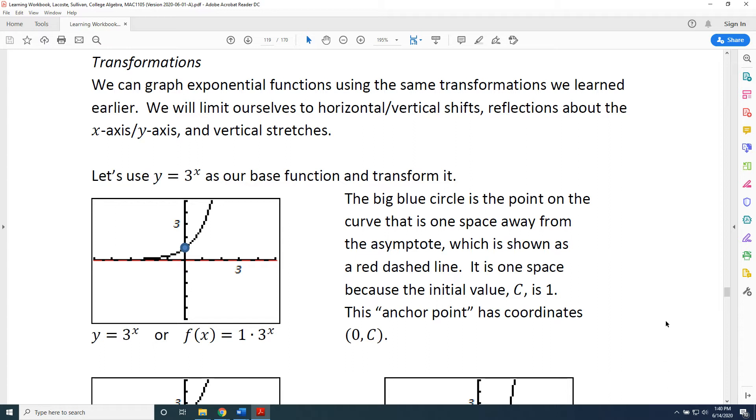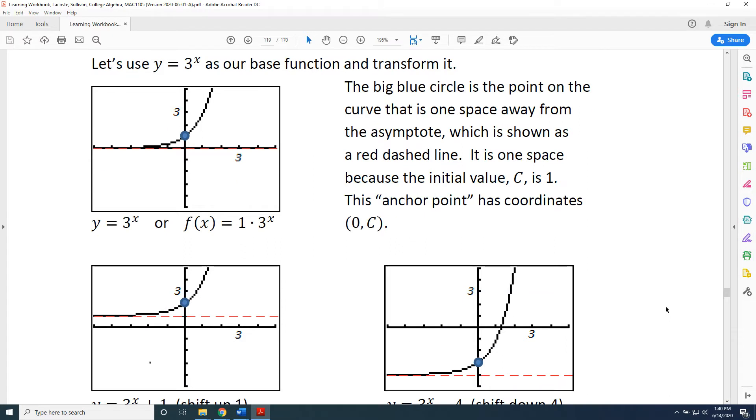Let's use y = 3^x as our base function and transform it. The big blue circle is the point on the curve that is one space away from the asymptote, which is shown as a red dashed line. It is one space because the initial value, capital C, is 1. We can rewrite the equation y = 3^x as f(x) = 1 · 3^x, so capital C is 1.